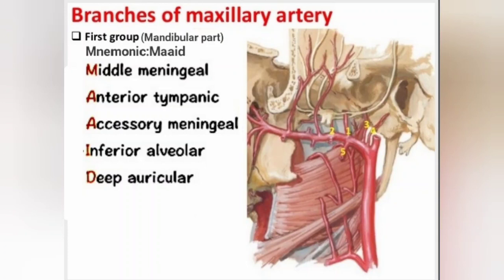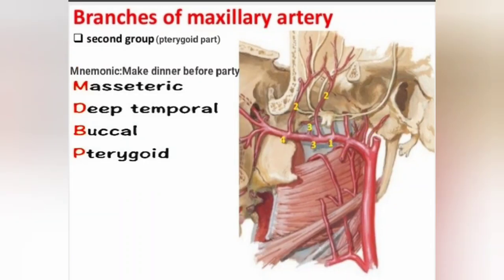You can remember the mandibular part branches by the mnemonic MADE: M — Middle meningeal, A — Anterior tympanic, D — Deep auricular, E — ... wait: M — Middle meningeal, A — Anterior tympanic, A — Accessory meningeal, I — Inferior alveolar, D — Deep auricular. For the second group, the pterygoid part, the mnemonic is 'Make Dinner Before Party.'